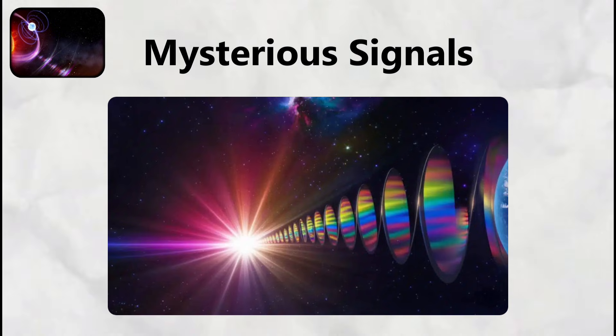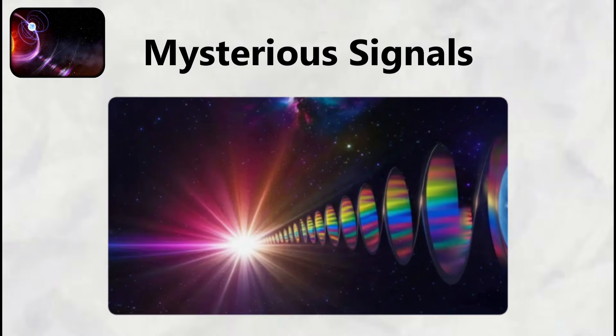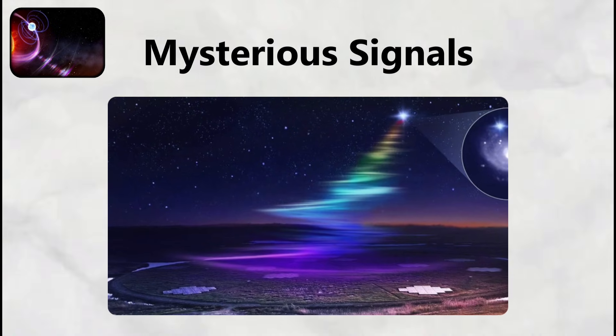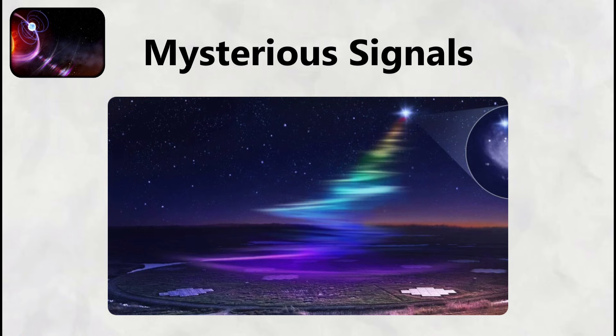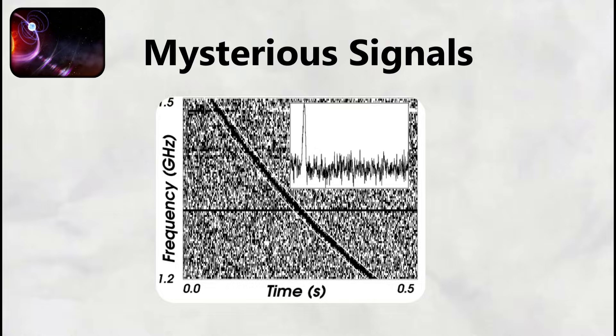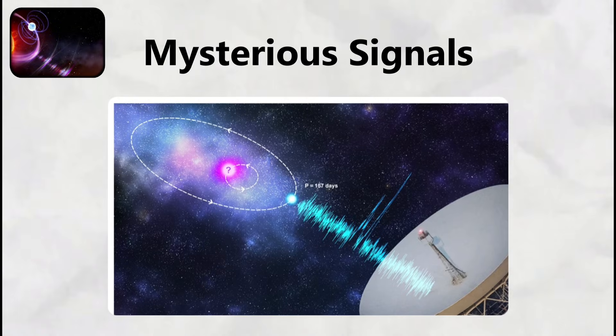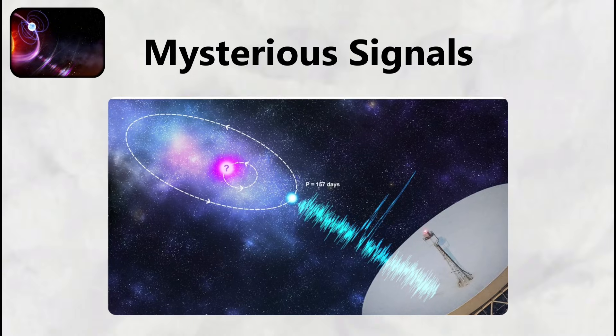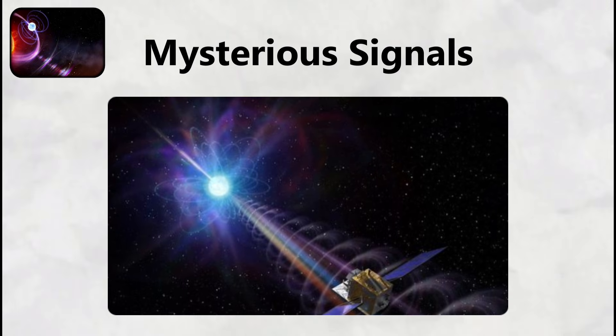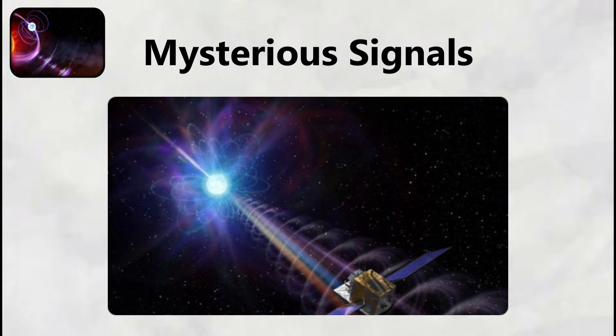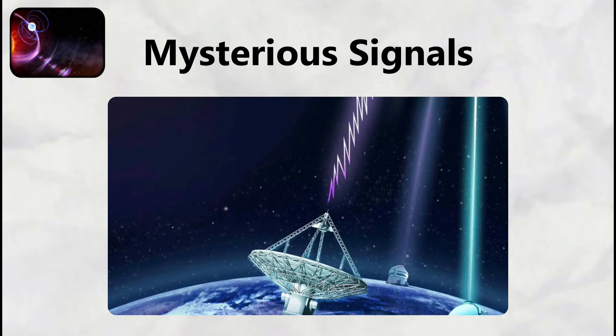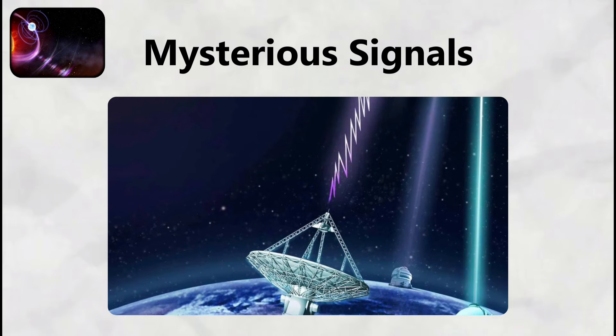originated from a source approximately three billion light-years away and lasted just five milliseconds while releasing energy equivalent to 500 million suns. Fast radio bursts occur randomly across the sky with no predictable pattern, making them impossible to anticipate or study in real time until recently. The source of these bursts remained completely unknown for over a decade, leading to speculation ranging from colliding neutron stars to alien civilizations attempting to communicate across cosmic distances.